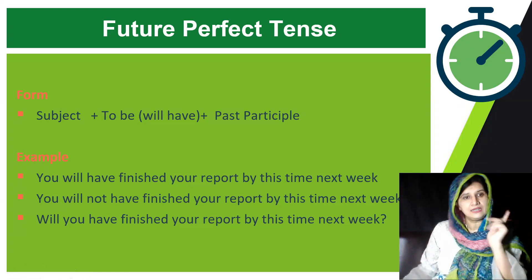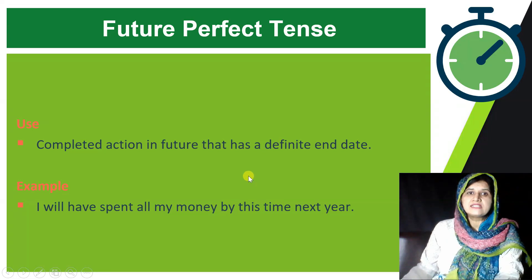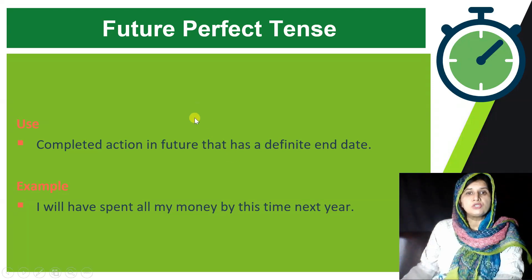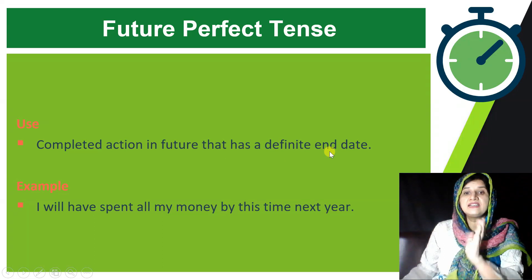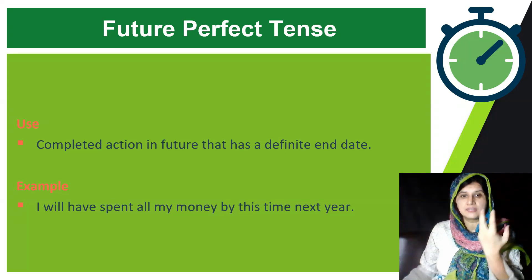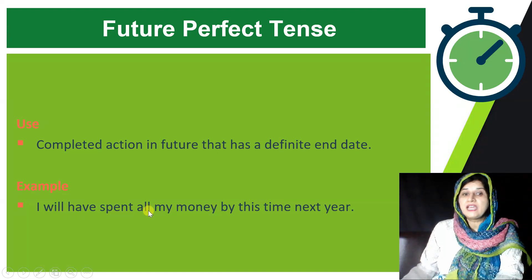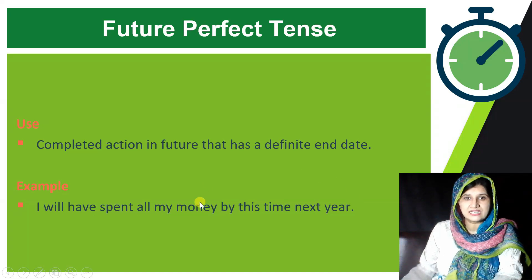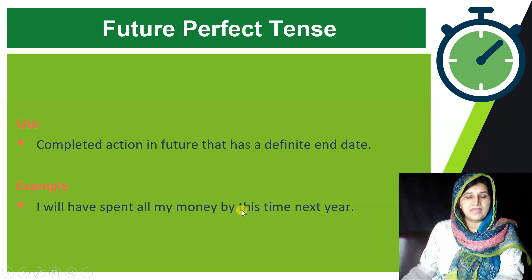Now let's see the uses of Future Perfect Tense. First, we use it to talk about a completed action in the future that has a definite end time. For example: 'I will have spent all my money by this time next year.' Here 'by this time next year' is a definite time marker indicating when the action will be completed.